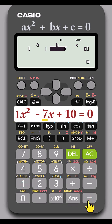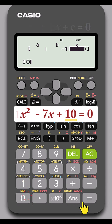B is the coefficient of x. So press minus 7 equals. C is the constant term. So 10 then equals.